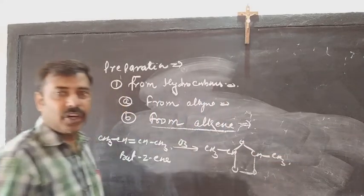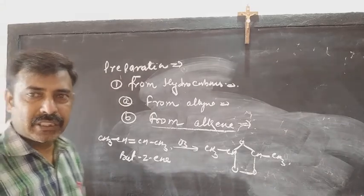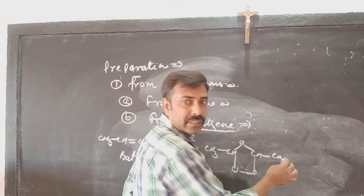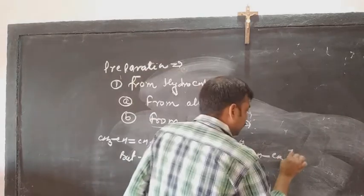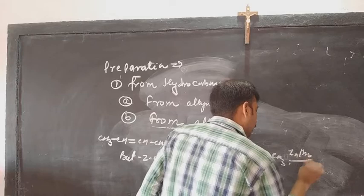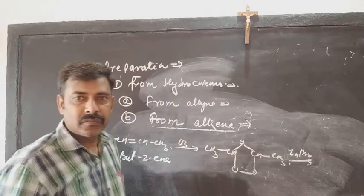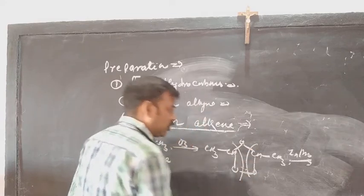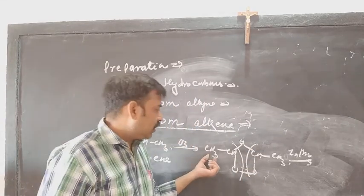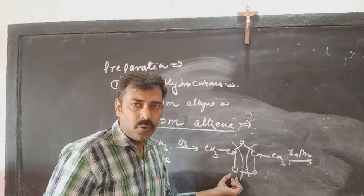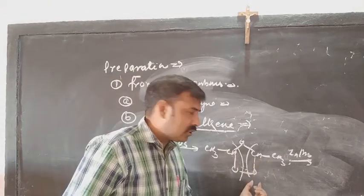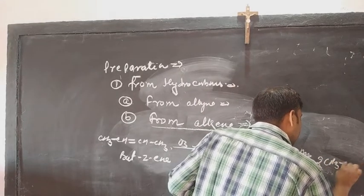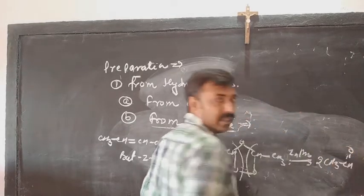The ozonide has a ring-like structure. Now in the presence of zinc and water, the ozonide will break. We can show the breaking in this way — this is the easiest way. The product is CH₃–CHO and CH₃–CHO. That means the product is 2 moles of CH₃CHO, that is ethanal.